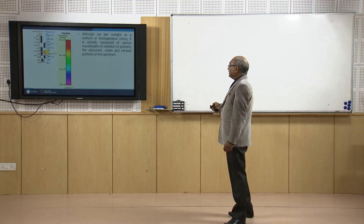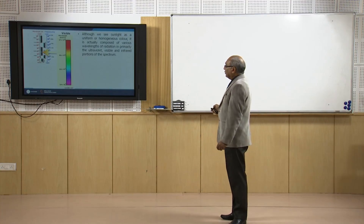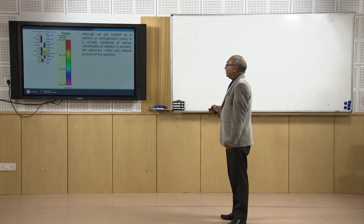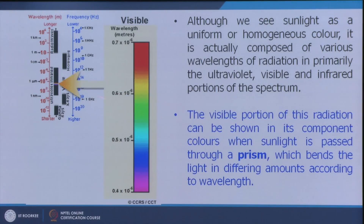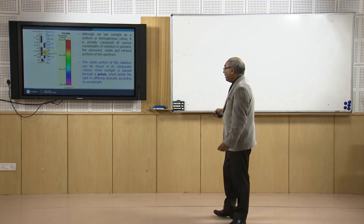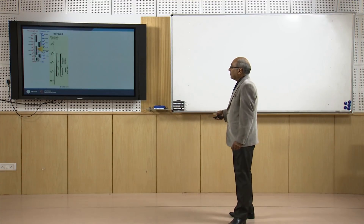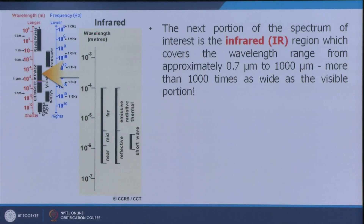Although we can see sunlight as a uniform or homogeneous color, it is actually composed of various wavelengths of radiation in the violet, visible, and infrared portions of the spectrum. The visible portion of radiation can be shown in its component colors when sunlight is passed through a prism, and all components of white light come out as a spectrum — VIBGYOR. The next important portion is the infrared, and there are sensors which work in the infrared part of the EM spectrum.